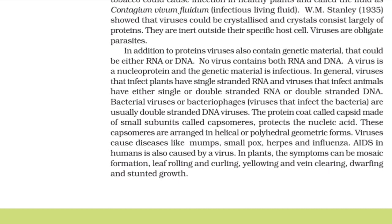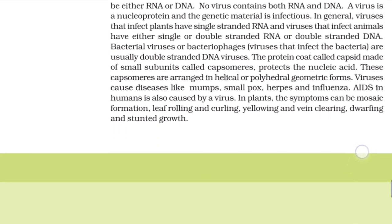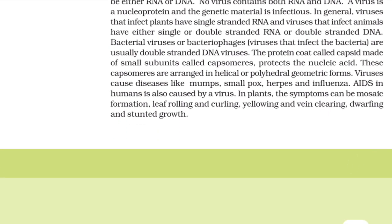Bacterial viruses or bacteriophages are usually double-stranded DNA viruses. The protein coat, called capsid, is made up of small subunits called capsomeres which protect the nucleic acids. These capsomeres are arranged in helical or polyhedral geometric forms. Viruses cause diseases like mumps, smallpox, herpes, and influenza. AIDS in humans is also caused by a virus. In plants, the symptoms can be mosaic formation, leaf rolling and curling, yellowing and vein clearing, dwarfing, and stunted growth.